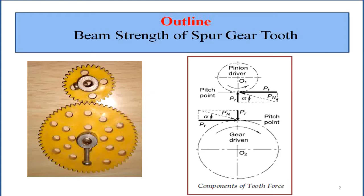Two forces are present on the gear: one is called Pt, the tangential force, also called the driving force, and another force called the radial force, Pr.